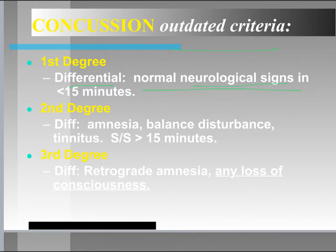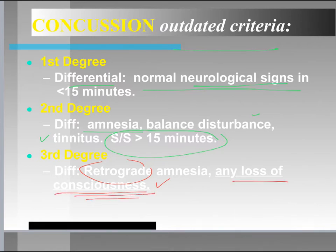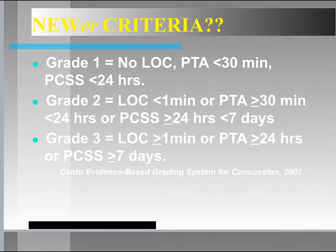In a second-degree concussion, there's typically anterograde amnesia — they can't remember what happened after the injury — along with balance disturbances and tinnitus lasting longer than 15 minutes. A third-degree concussion involves retrograde amnesia — the inability to recall things before the injury — along with any loss of consciousness. Any loss of consciousness, even for five seconds, qualifies as third-degree.